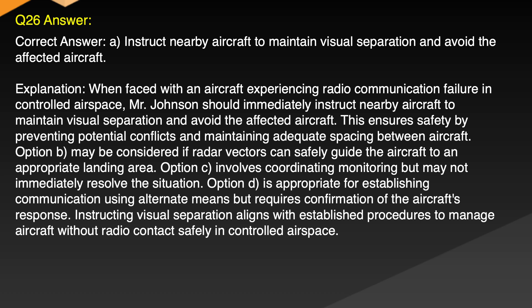Explanation: When faced with an aircraft experiencing radio communication failure in controlled airspace, Mr. Johnson should immediately instruct nearby aircraft to maintain visual separation and avoid the affected aircraft. This ensures safety by preventing potential conflicts and maintaining adequate spacing between aircraft. Option B may be considered if radar vectors can safely guide the aircraft to an appropriate landing area. Option C involves coordinating monitoring but may not immediately resolve the situation. Option D is appropriate for establishing communication using alternate means but requires confirmation of the aircraft's response. Instructing visual separation aligns with established procedures to manage aircraft without radio contact safely in controlled airspace.